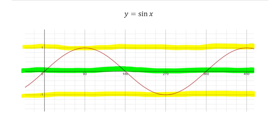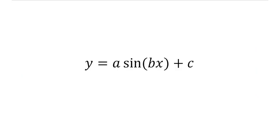There are a couple more things we'll notice about the sine graph as we carry on, but those are the most important observations to start. We won't just sketch sine x — we need to sketch the graph of a·sine(bx) + c. We need to understand what the values of a, b, and c do. I'll illustrate that using Desmos, so let's shift over there now.